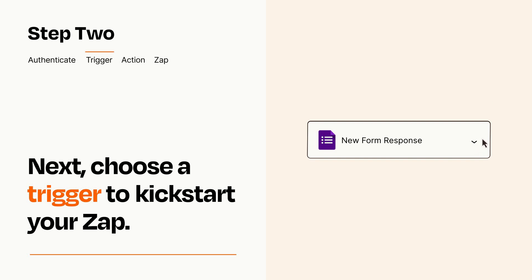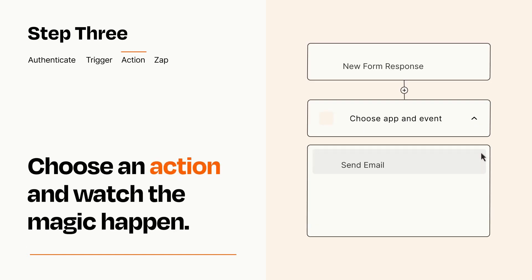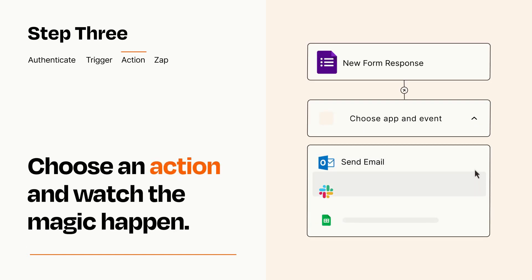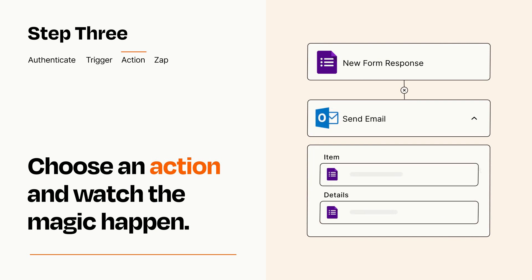This last part is where the magic happens. Choose the action you want to happen in your target app. You'll see a bunch of fields where you can specify the details of your Zap. You can type free form text or pull data in from your trigger step as needed.